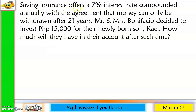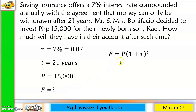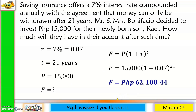Let us identify what we have here. We have a 7% interest rate, so R is 0.07. And then after 21 years, so our T is 21. And then they decided to invest 15,000 pesos, so this is our P. We are looking for the future value, which is F. Our formula is F is equal to P times the quantity 1 plus R raised to T. Let us substitute our values here, and this will give us 62,108 pesos and 44 centavos.